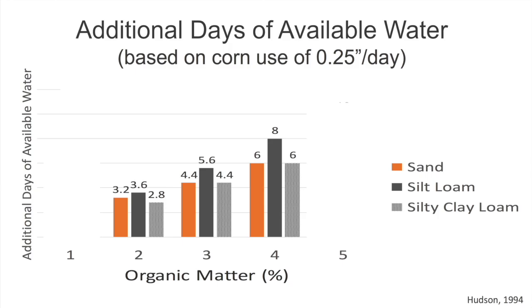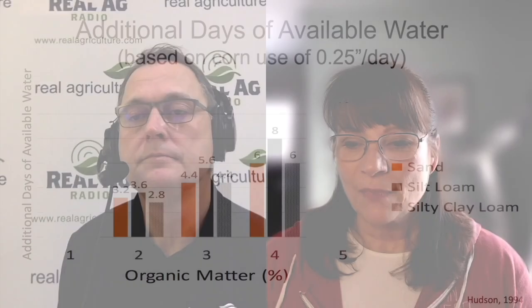When you have 2% versus 4% organic matter, it means that your crop can go longer without moisture between rainfalls, which is really important in July and August in the Northern Hemisphere. If you can go from 4 days to 8 days without rain, that can mean the world of difference. Soils with lower organic matter on sands need rain almost every day to grow a corn crop when the corn is at its most mature stage.